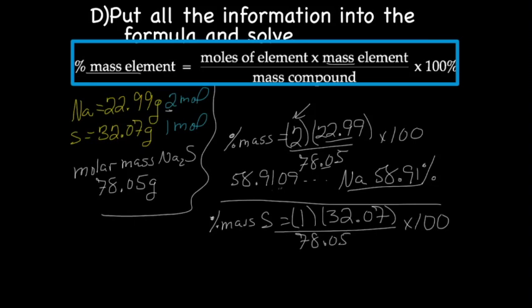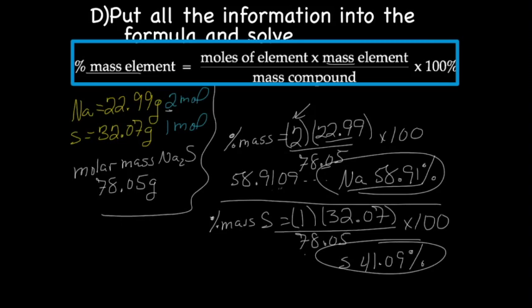And I got 41.09 percent. We once again have four sig figs, so our final answer will be S is 41.09%. Now, to make sure you did this right, if you add the two percentages up, they should add up to 100 or right about 100 with taking rounding into account. So the mass of sulfur is 41.09% of the total mass of the compound, and the mass of sodium is 58.91% of the total mass of the compound.